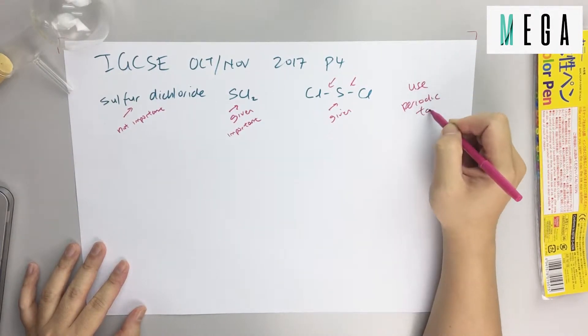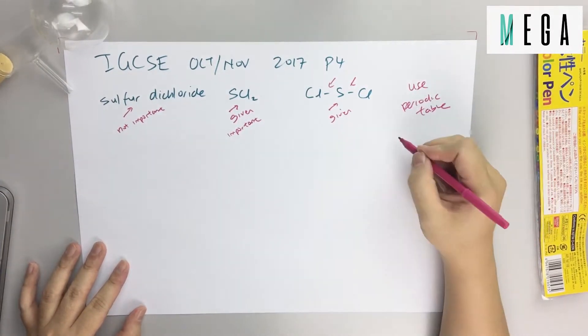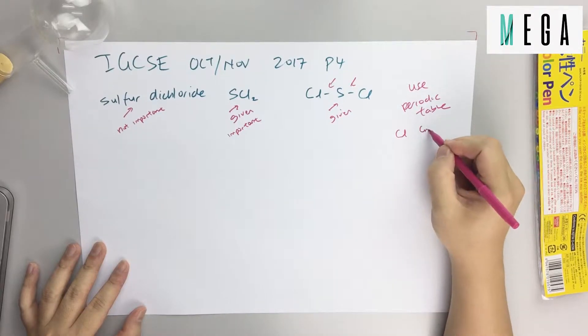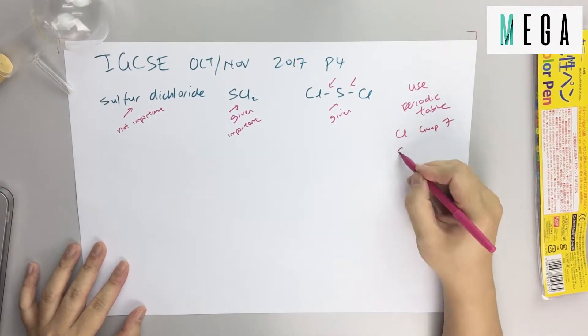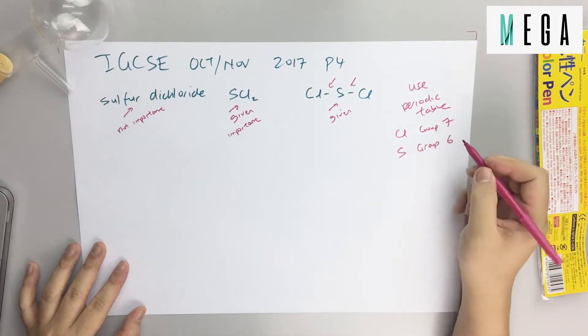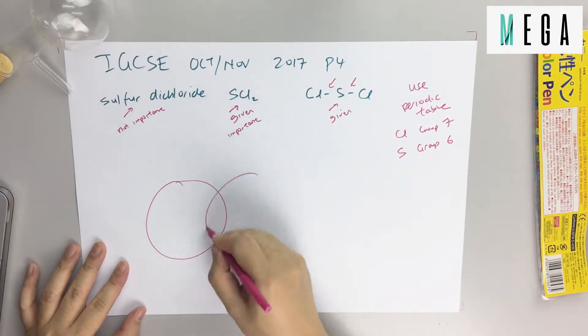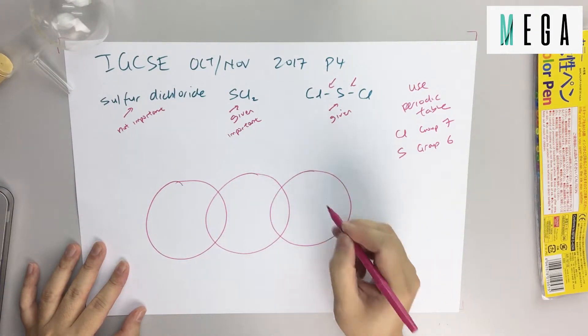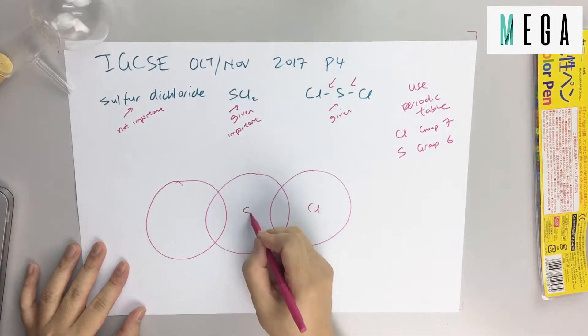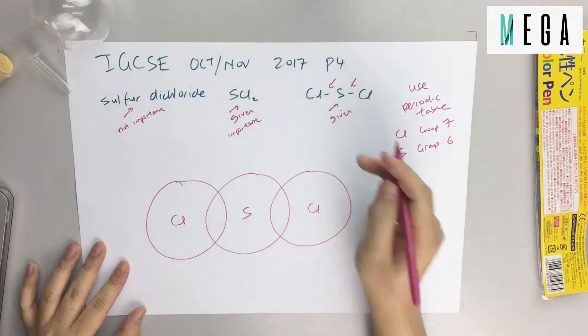Use the predict table. Find chlorine in group 7, find sulfur in group 6. So referring to that, draw the circles. This time they did not give us the circles, they want us to draw, so just follow: Cl, sulfur, and Cl.